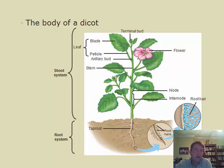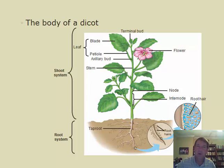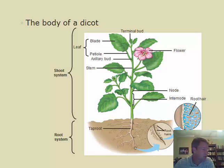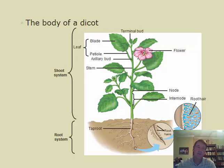The tissue inside each plant part is distinct, so if we're unsure whether something is a stem or part of a leaf, we can look at the internal tissue to tell them apart. Flowers are the reproductive structures of the plant. The root system includes different types of roots — taproot and fibrous root — which differ in monocots and dicots.